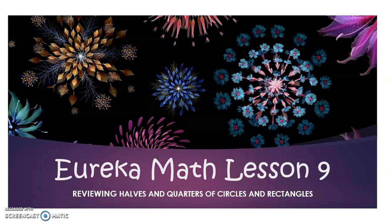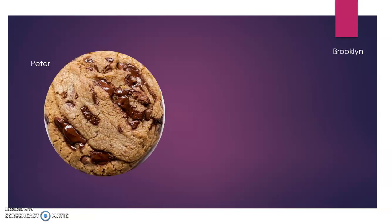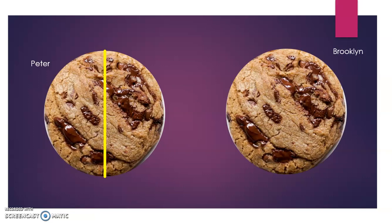To help me out today, I have Peter and Brooklyn. I gave Peter and Brooklyn some cookies. Peter broke his cookie like this, and Brooklyn broke her cookie like this.